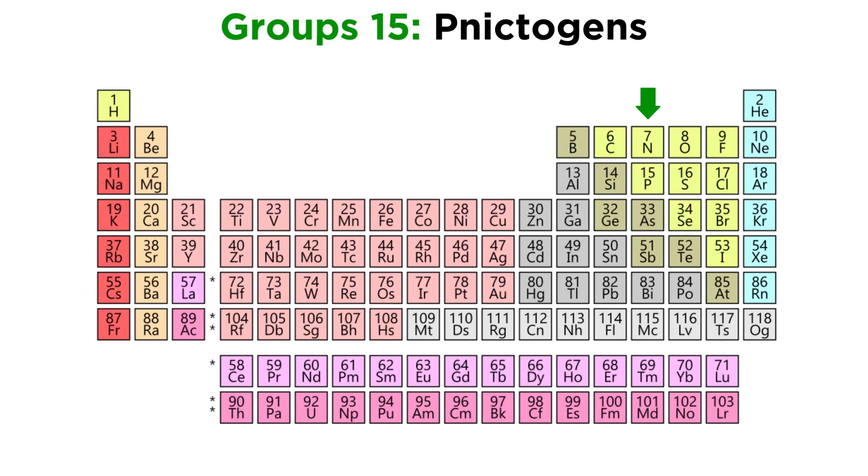Moving to some of the more familiar elements, group 15 is called the nictogens, including nitrogen and phosphorus, which are common elements with similar reactivity. Group 16 is called the chalcogens, including oxygen and sulfur. Group 17 is called the halogens. This includes fluorine and chlorine, which also react similarly.